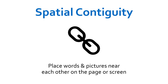The Spatial Contiguity Principle says that wherever possible, any words that relate to the graphics on the slide should be as close as possible to the graphic. So this does two things. First of all, it indicates the relationship — somewhat similar to the signalling principle — between the word and the graphic. And secondly, it reduces the demand placed on the visual channel whereby the eye is being asked to switch between the word and the graphic.